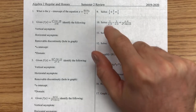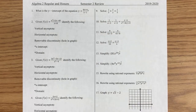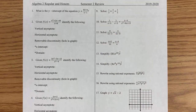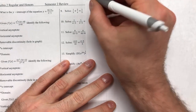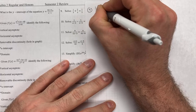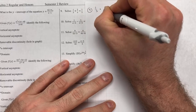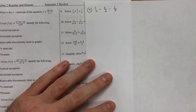Today we're moving on to the 9 through 20 portion of the Semester 2 exam review. Let's start with number 9. If we copy down the example, it's going to be 1/3 plus 2/x equals 1/5. Let's take a good look at this equation.